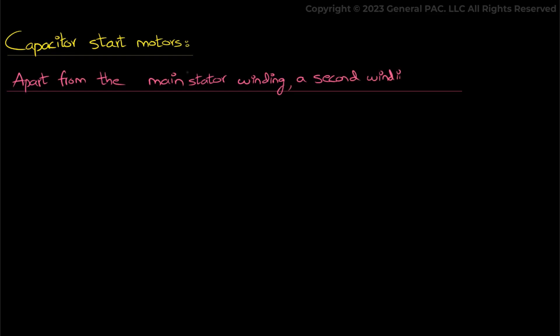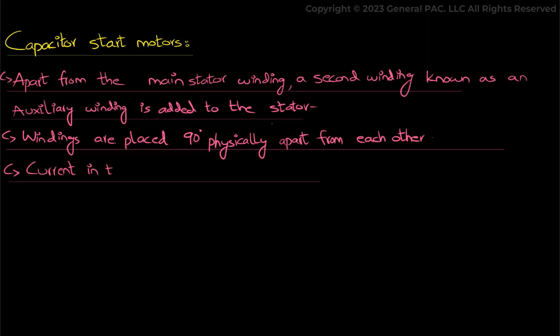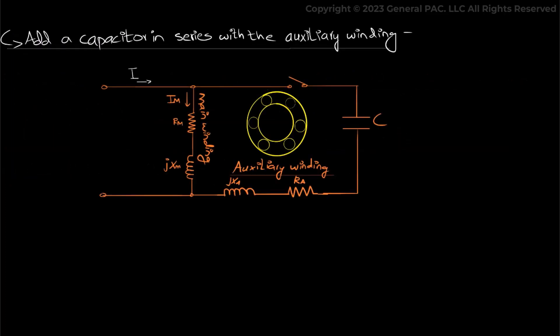A second winding known as the auxiliary winding is added to the stator. And these two windings are placed 90 degrees physically apart from each other so that the current in the two windings lag each other. A capacitor is then inserted in series with the auxiliary winding.